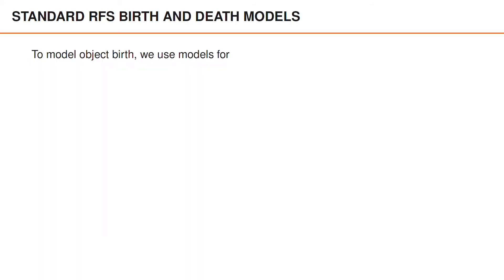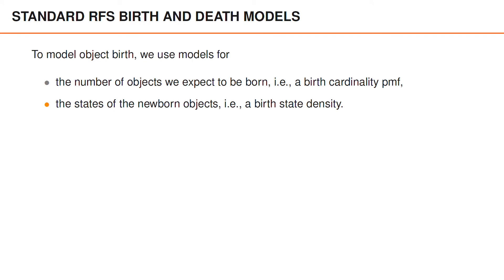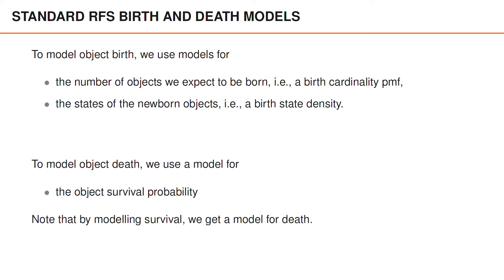When we use random finite sets to model the multi-object tracking problem, in order to model the object birth, we use a model for the number of objects that we expect to be born. In other words, we have some form of birth cardinality probability mass function, or PMF. We have models for the states of the newborn objects, in other words birth state densities. To model object death, we use what is called the object survival probability, or simply the probability of survival. By modeling the survival, we implicitly get a model for object death, since an object either survives or dies.